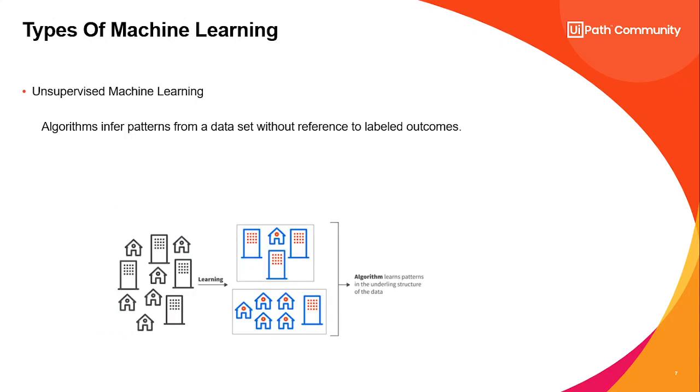Next, unsupervised machine learning. The unsupervised algorithms infer patterns from a data set without reference to labeled outcomes. The example would be looking at all credit card transactions and identifying credit card fraud by finding transaction outliers. It depends on the patterns formed by the data set. For example, if you see here the buildings, this would be the pattern in the structure of the data.